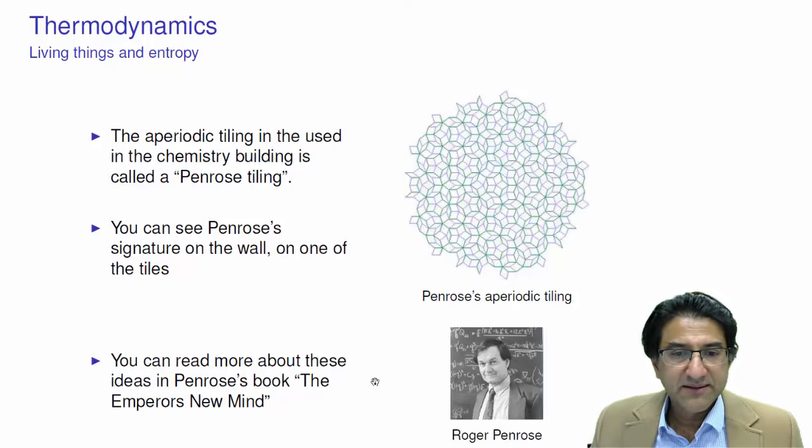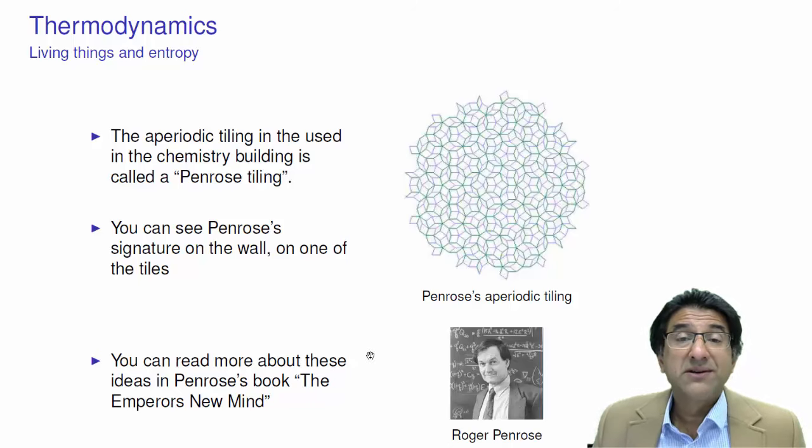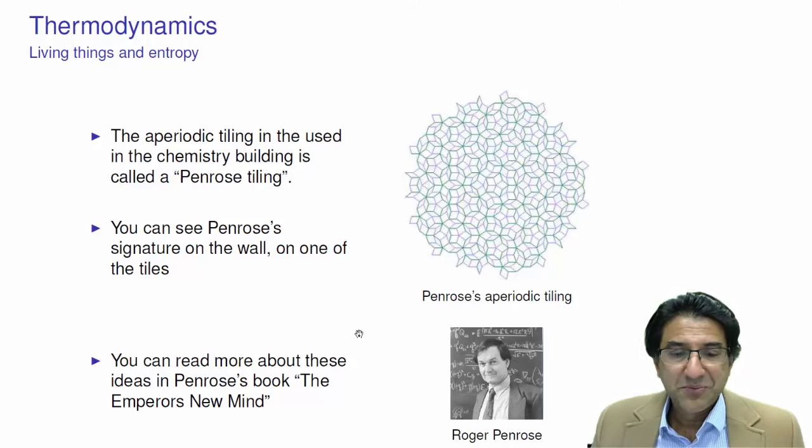You can read more about these ideas in Penrose's book, The Emperor's New Mind, where he proposes these ideas, which are actually just a rehash of Schrödinger's original ideas. Hope you enjoyed that.